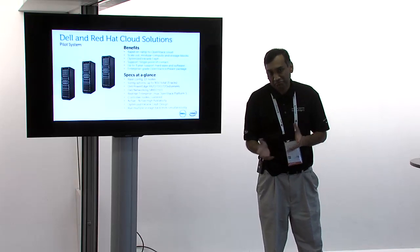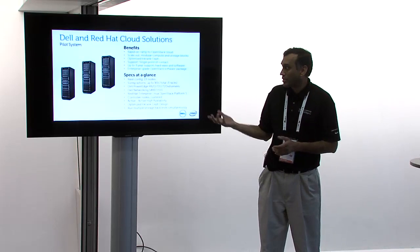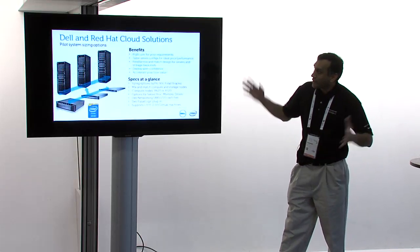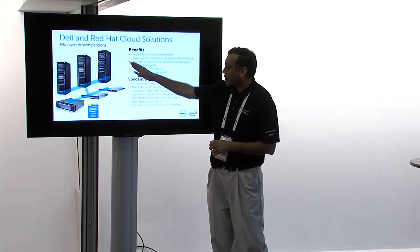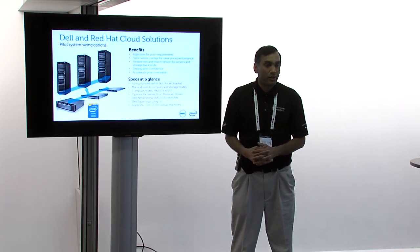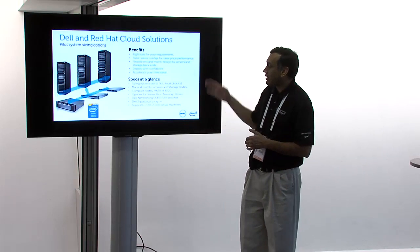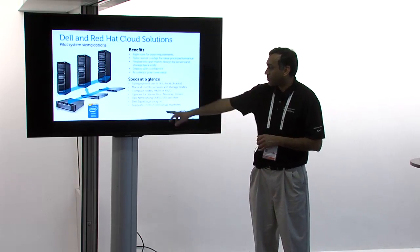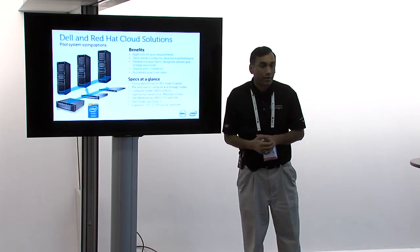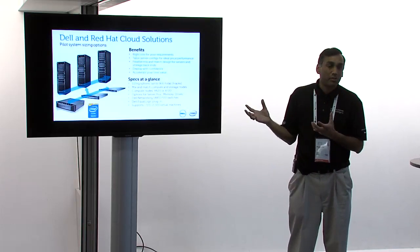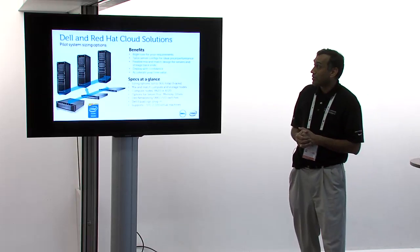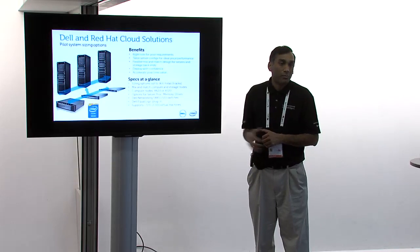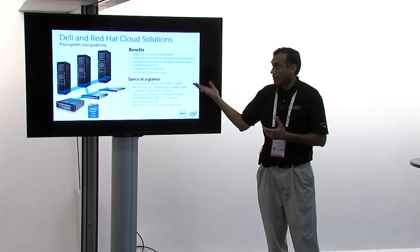The sizing options allow you to scale up in increments of one node, or add a complete new rack. We have two server options — 620s and 720s for compute, and 720XD for storage — getting up to 2,000 virtual machines or two petabytes of storage. It's well-sized for your requirements with good price-performance, and deployment is all pre-tested, meaning less than a week to get the whole thing up and running on-site, with Dell and Red Hat working together to help you deploy.